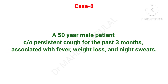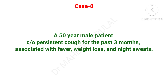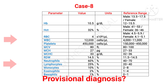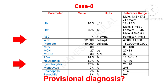A 50-year-old male patient complaining of persistent cough since 3 months, associated with fever, weight loss, and night sweats. On examination, general appearance is thin, pale, and patient is febrile. On respiratory auscultation, there are reduced breath sounds over the upper lobe, crackles, and occasional wheezing. In CBC, there is a rise in WBC count; neutrophils and lymphocytes are in the normal range, but monocytes are increased. This is an example of the early stage of a respiratory infection. On the chronic stage, there will be drastic changes in CBC. Guess the diagnosis and comment in the comment box.